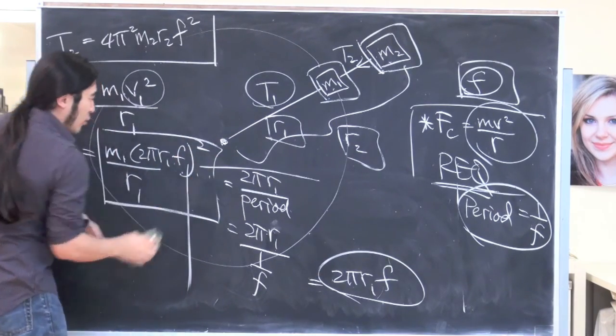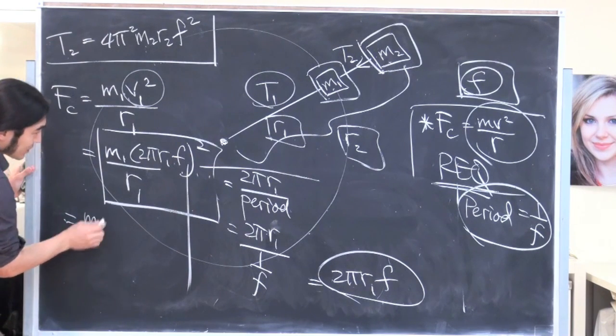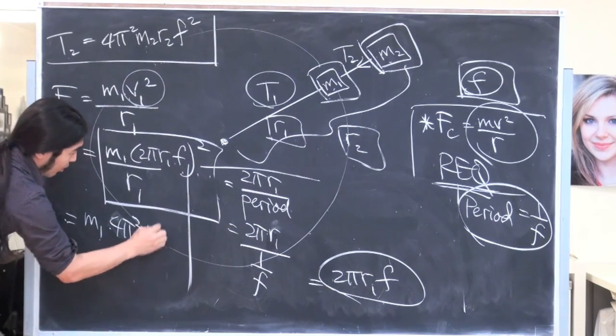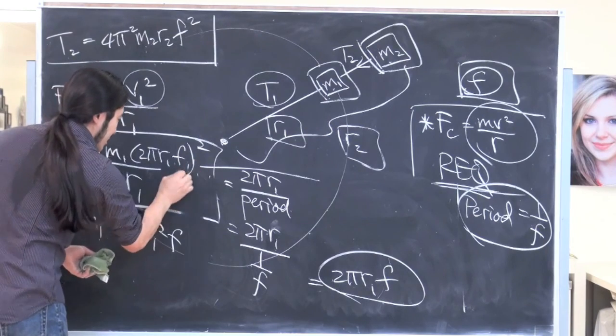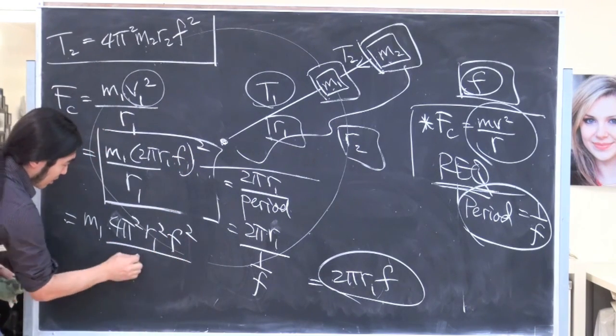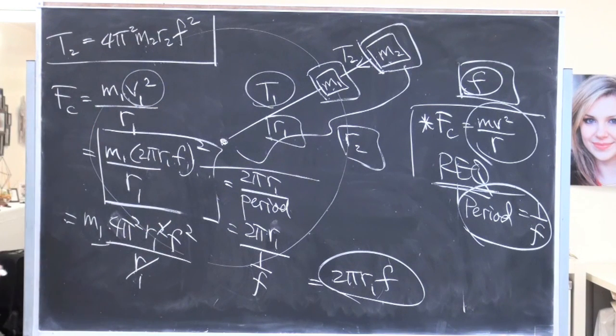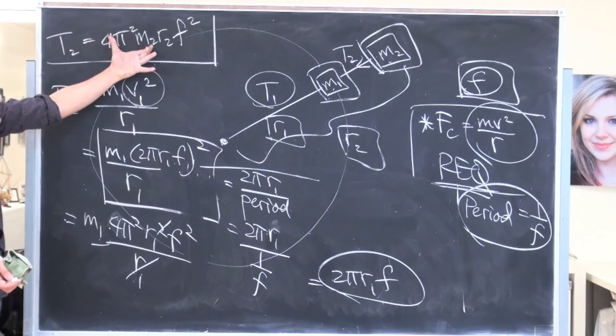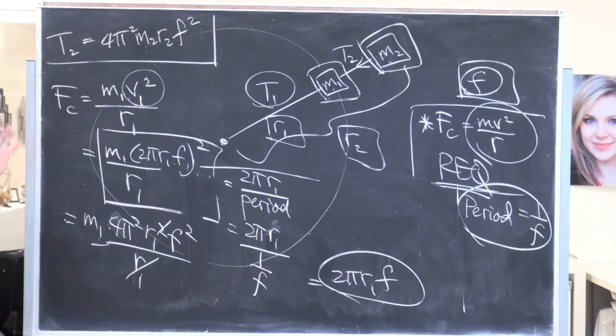Almost done, but actually there's a little bit more work, even once we're done with this. Let's finish this. This is m1, well, let's do it all out this time. 4π² r1² f² over r1. And then what we'll do is we'll kill the r1 top and bottom. Looks really similar to this. In fact, we could have skipped these steps, because you know it's going to follow the same pattern. We're just going to replace it by m1 and then r1.